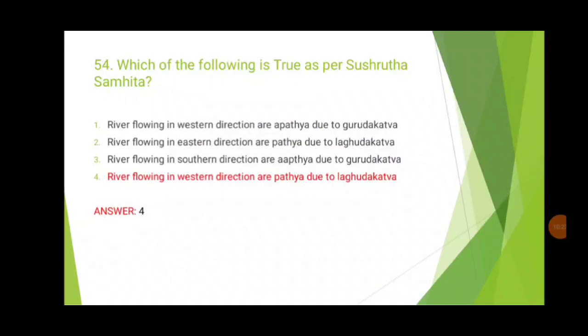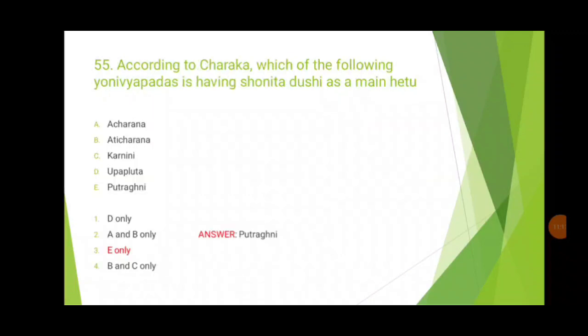The 54th question asks which of the following is true as per Sushruta Samhita. Even without knowing the answer, narrow it down: one option says rivers flowing in western direction are apatya due to guru; another says they are patya due to laghu — these are opposites, so only one can be true. Mnemonic: 'West is the best' — western direction rivers are patya because they are laghu.